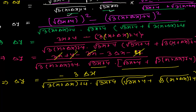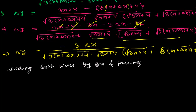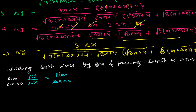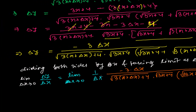Now I divide both sides by δx and take the limit as δx tends to zero. So I write: limit as δx → 0 of δy/δx equals limit as δx → 0 of −3δx divided by the full denominator. The δx in the numerator and denominator cancel out.